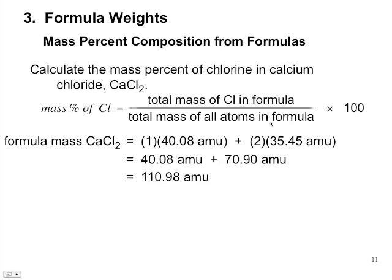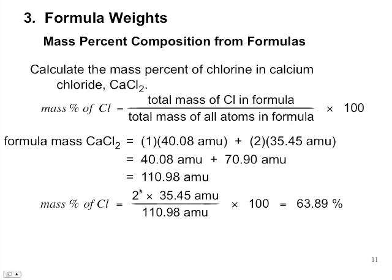So that's the total mass of all atoms in the formula. To calculate the mass percent of chlorine, we go ahead and take the total mass of chlorine in the formula and divide it by the formula mass. And to express it in parts per hundred or percentage, we multiply by 100.